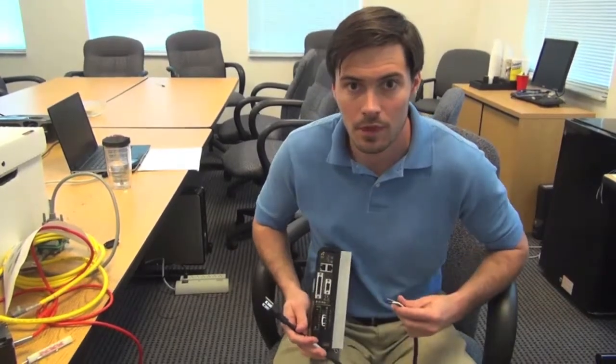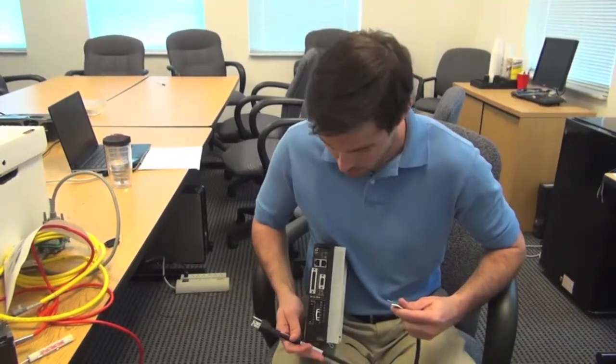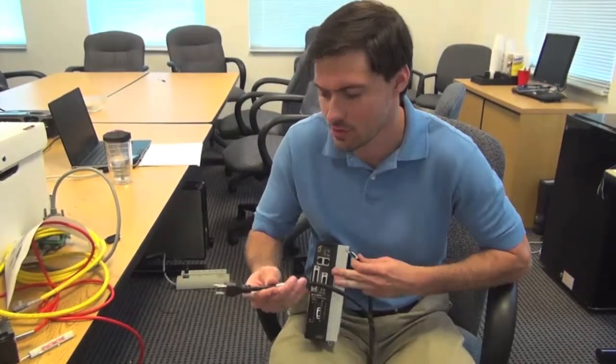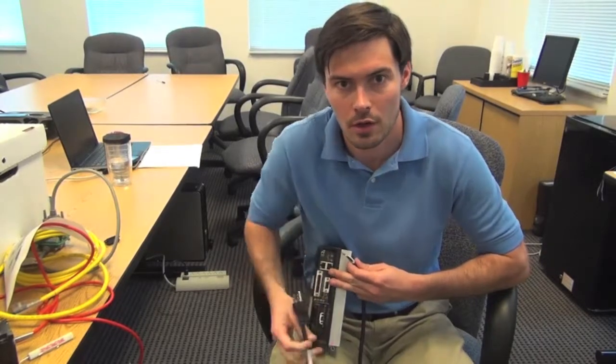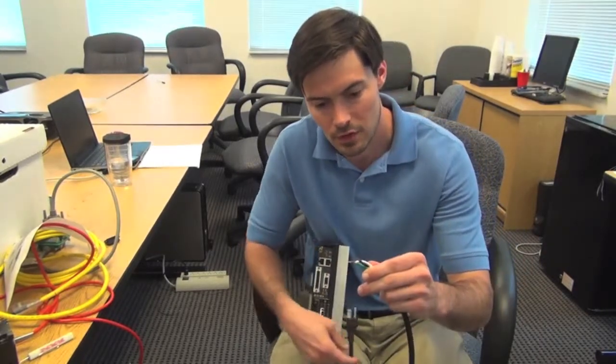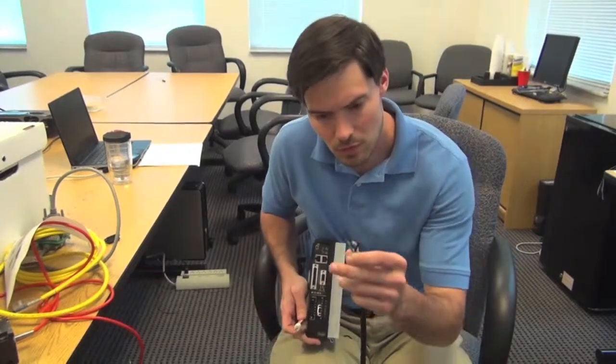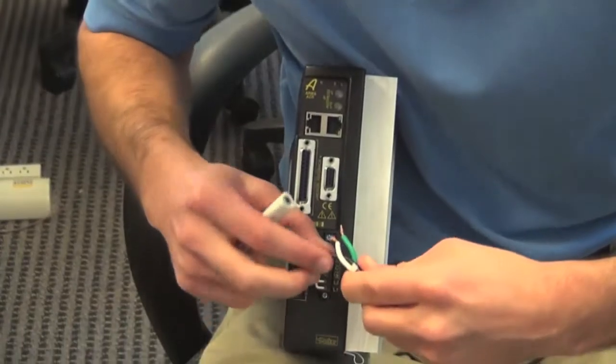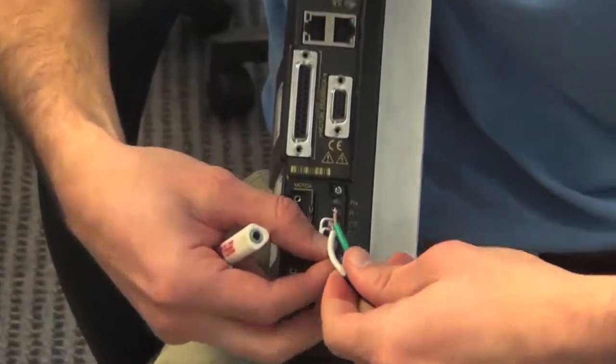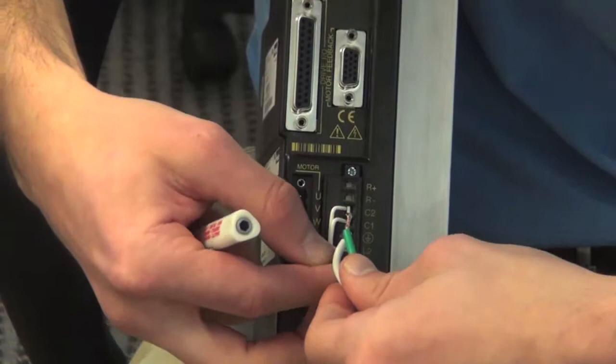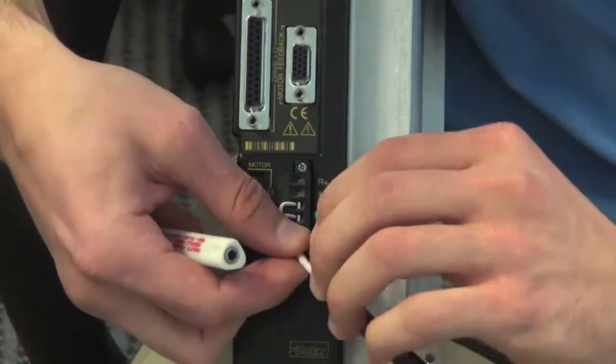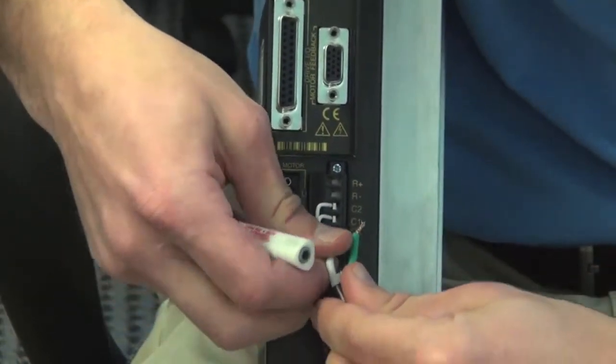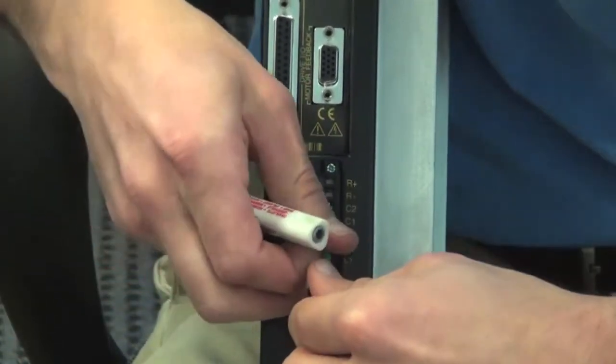Okay, now we're going to go over hooking up the Aries, starting with the power: 120 volts main AC power. I just have a standard plug that goes into your wall, stripped on the other side. I'm just going to strip the leads off and hook them up to the Aries. Black will go into the L1 connection, white will go to your L2, and green goes to your ground.